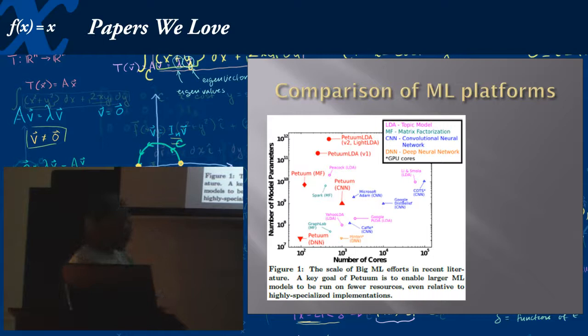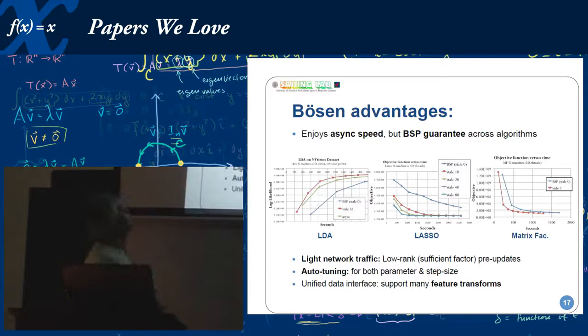So now we go into basically the comparison of machine learning platforms. As you can see, what we have here is the number of cores and the number of model parameters served. So in other words, the more model parameters that you serve with fewer number of cores, the better off you are. So if you are on this side of the graph, you're good. So if you look at all the Petuum solutions, they are on this half of the graph. So I'll show you that they are better solutions, which is what can we expect from people who are pushing this solution.